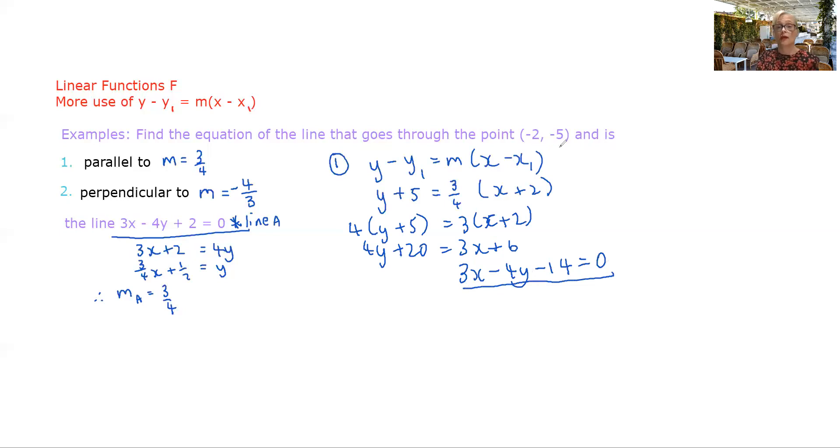That is the line that goes through that point and is parallel to this line. Makes sense that it starts in the same way 3x - 4y because we should have the same gradient.